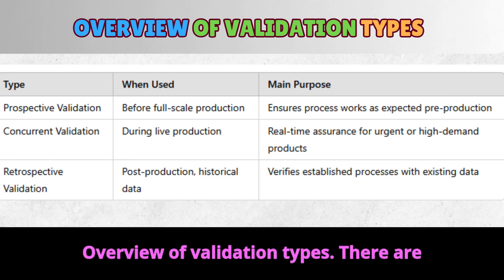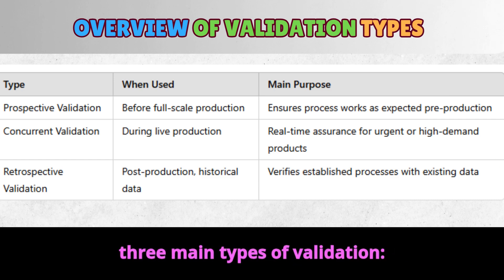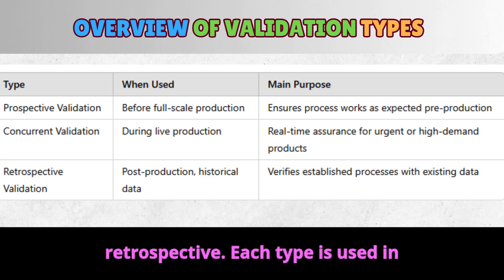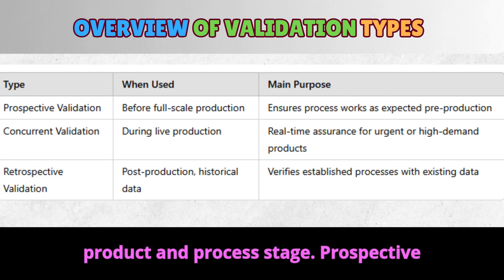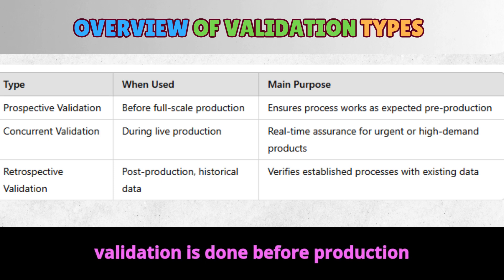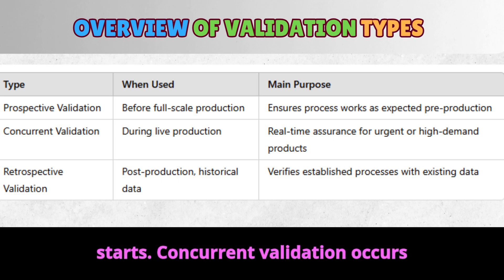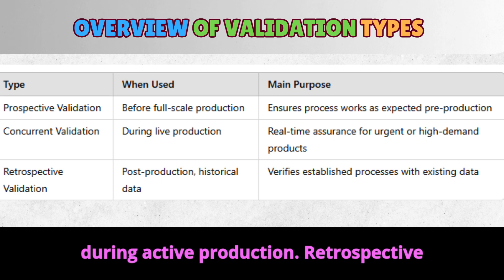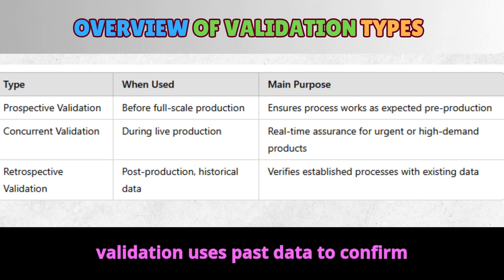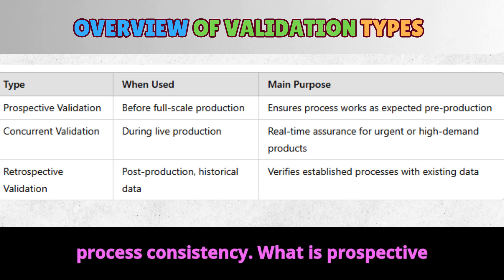Overview of validation types. There are three main types of validation: prospective, concurrent, and retrospective. Each type is used in different scenarios depending on the product and process stage. Prospective validation is done before production starts. Concurrent validation occurs during active production. Retrospective validation uses past data to confirm process consistency.